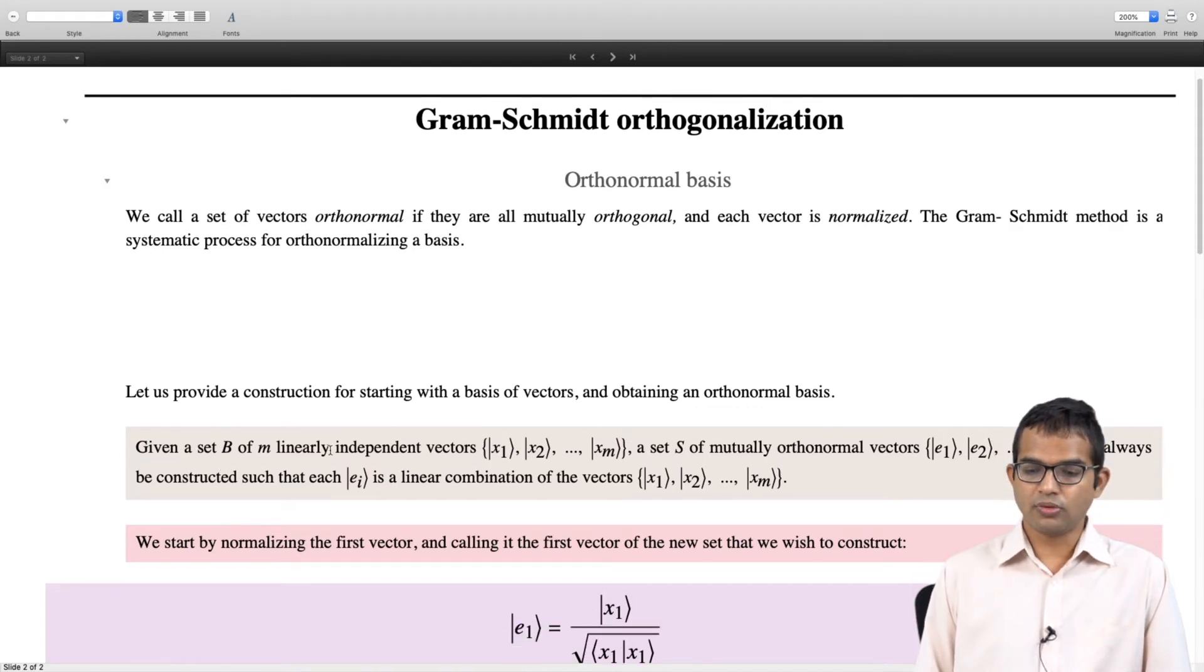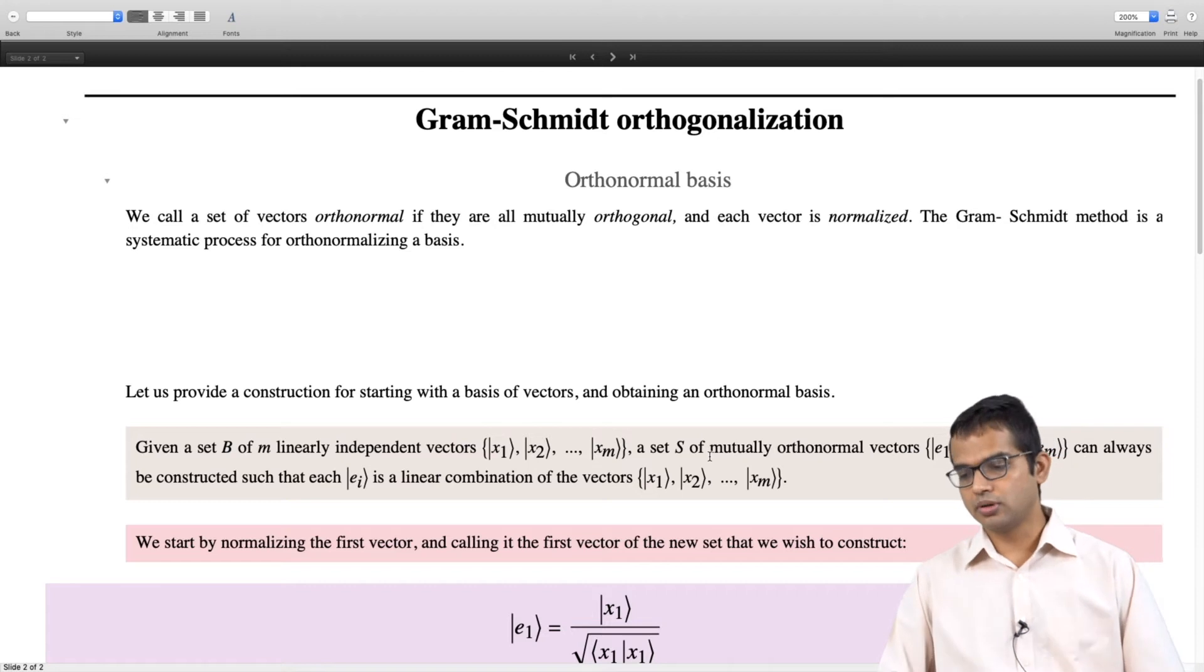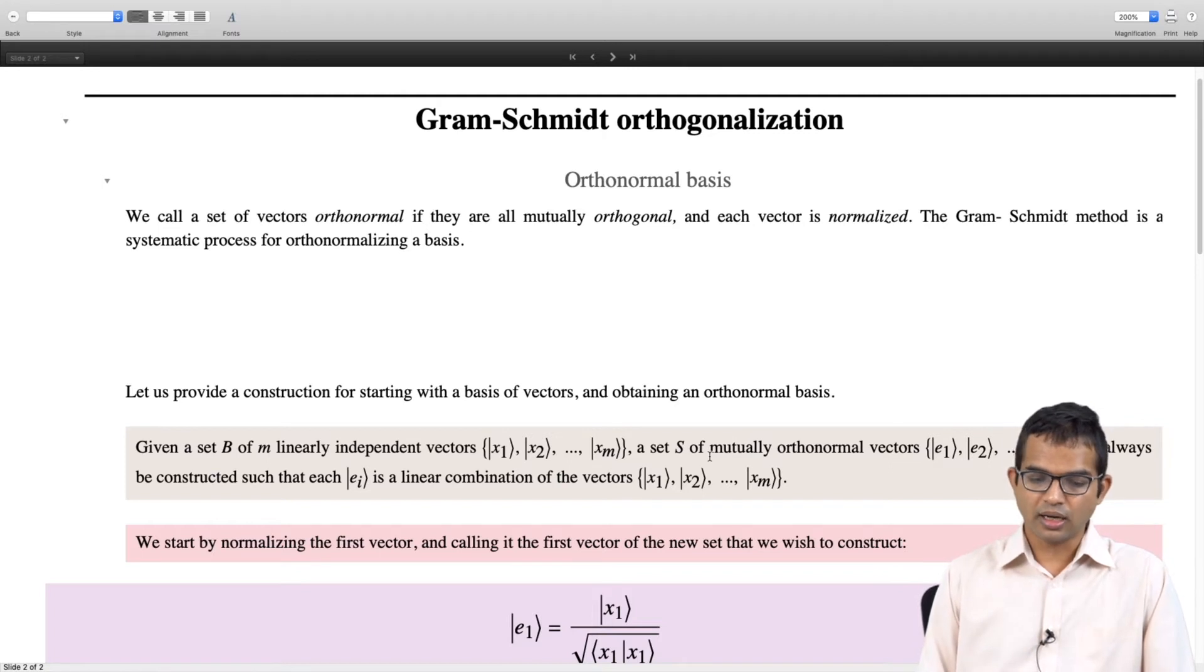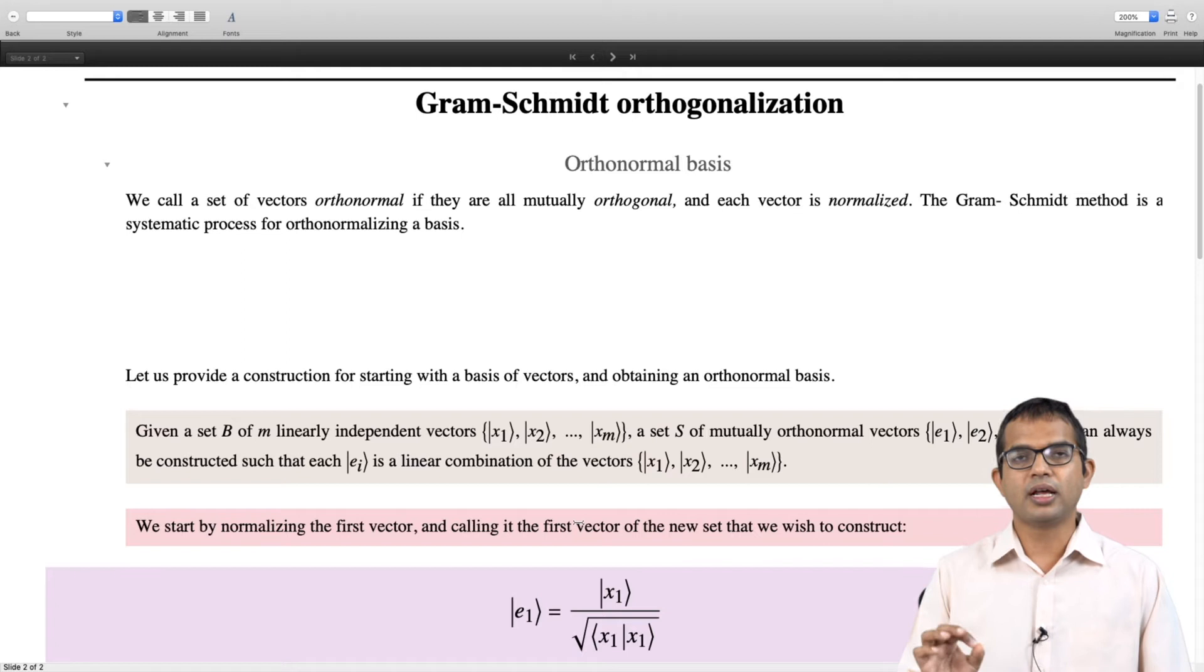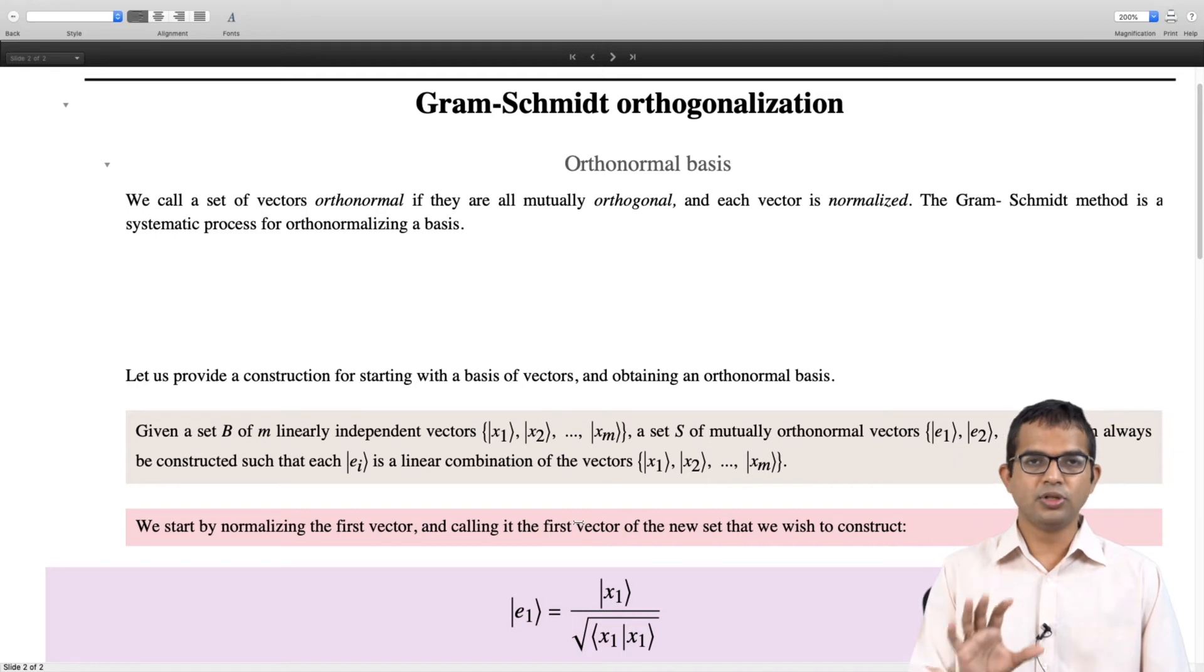Given a set B of M linearly independent vectors, a set S of mutually orthonormal vectors E1 to EM can always be constructed. Let us start by picking up any one vector - without loss of generality we can call it x1. So E1 equals x1 divided by its norm, so that E1 has been normalized. The first step is to take any one vector and normalize it, and that will be your first element in the basis that you are creating.